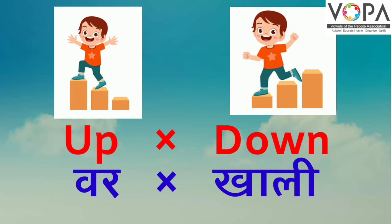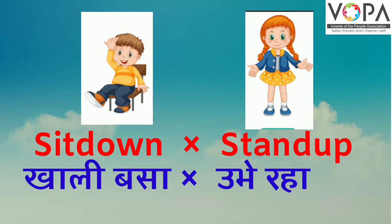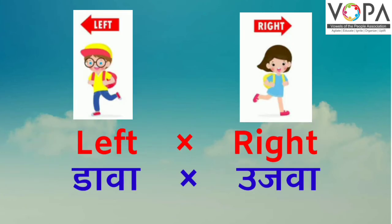Up — Opposite — Down (Var Viruddha Khali). Sit Down — Opposite — Stand Up (Khali Basa Viruddha Ube Raha). Left — Opposite — Right (Daava Viruddha Vujwa).